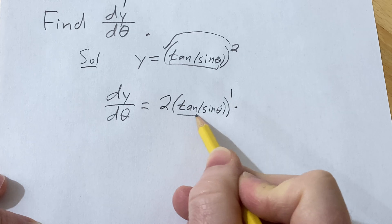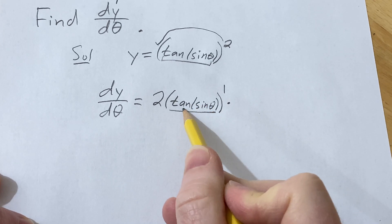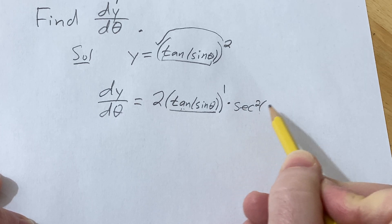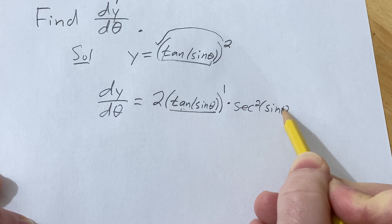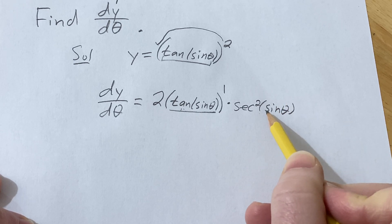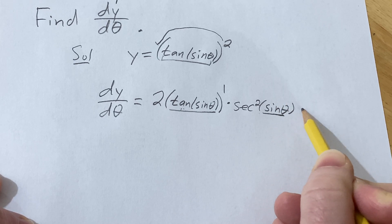And then now you multiply by the derivative of the inside. The derivative of tangent is secant squared, so this is secant squared sine theta. And then now you multiply by the derivative of the inside again, so chain rule again. The derivative of sine is cosine.